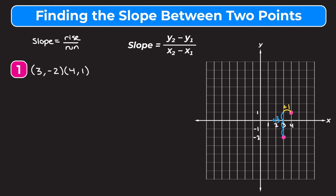That's a positive 1 for our run. So if I write this slope from our graph, we went up 3 and to the right 1, so positive 3 over positive 1. Simplifying, that's 3 over 1, which is just equal to 3.